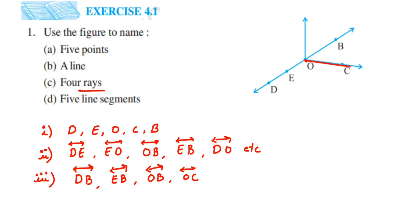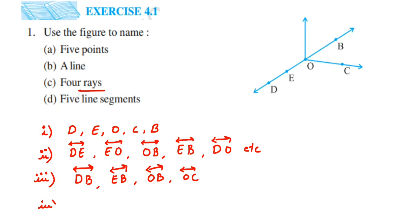The last question asks for five line segments. Line segments are those which have two fixed points. Here, EO can become a line segment — though this is a line, a line segment can be part of a line, and E and O will be the fixed points. When representing a line segment you draw a line on top without any arrows.